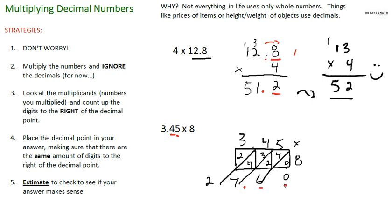So our answer is 27.60. I'll double check by doing an estimate. So 3.45 rounds to 3 times 8 equals 24. 24 is pretty close to 27.60, so that checks out as well. All right, just a quick tutorial. Give it a shot and see how you do. Good luck!